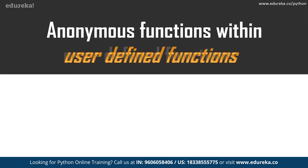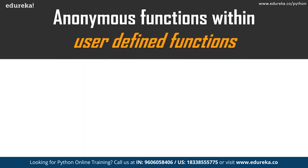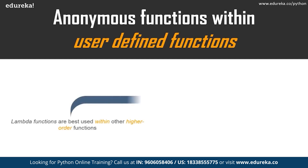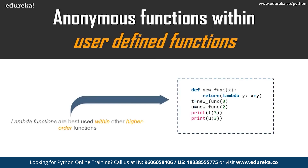The first thing we're going to study is anonymous functions within user-defined functions. As you can see on the screen, I have a user-defined function that takes the Lambda function as an input. In this example, the normal Python function — in my case 'new_func' — takes one argument x. This argument is then added to some unknown argument which is supplied through the Lambda function. Let me jump on to my Jupyter notebook to explain this in detail.